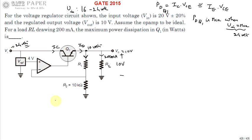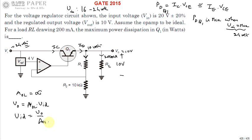We don't need the values of R1 and RL. The op-amp is ideal. One important characteristic of an ideal op-amp is that its open-loop gain is infinite. Therefore the input differential voltage Vid equals Vo divided by Aol, which is Vo divided by infinity, which equals zero. This means the voltage at the non-inverting terminal minus the voltage at the inverting terminal equals zero, so V+ equals V−.